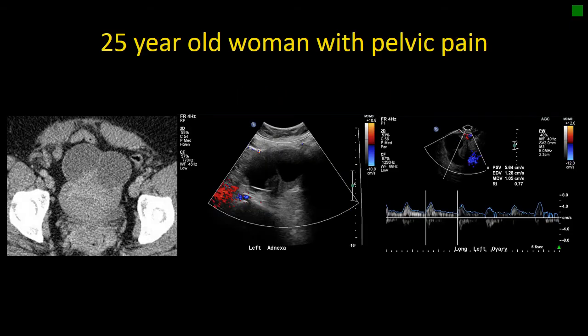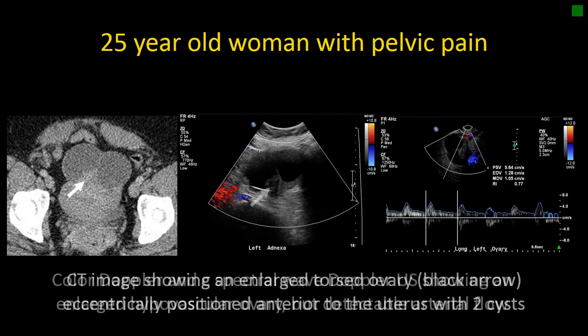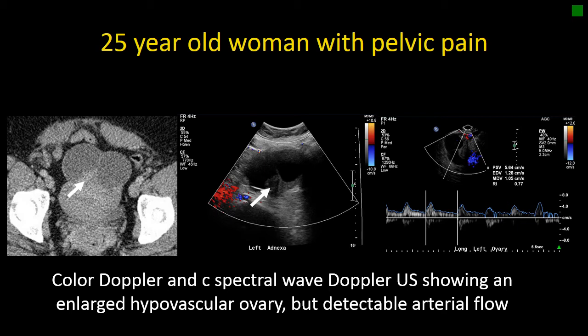Now let's take a look at a case of a 25-year-old woman presenting with pelvic pain. She received a CT in the emergency room, and on CT we saw an ovary positioned anterior to the uterus with two large cysts. The white arrow points to the ovarian stroma, which is thicker than you would expect. Also note slight uterine deviation. Because of the suspicious location of the ovary, an ultrasound was performed, which showed a somewhat hypovascular ovary — meaning not good blood flow is detectable within that triangular area of soft tissue between the two cysts.